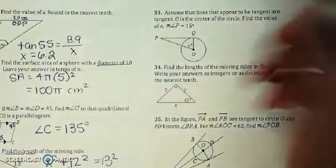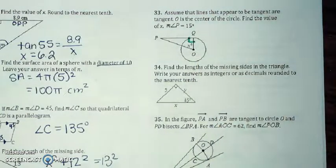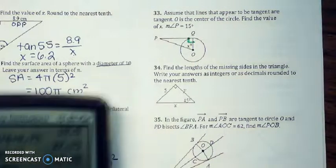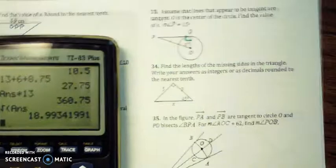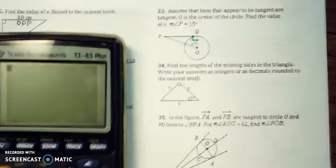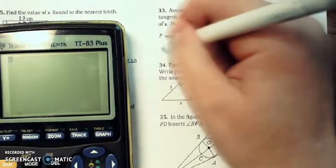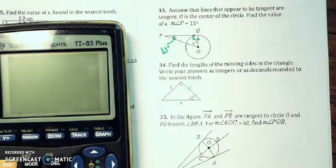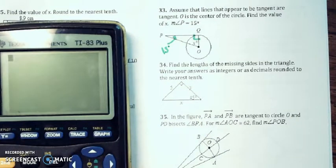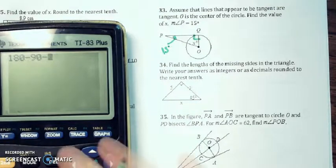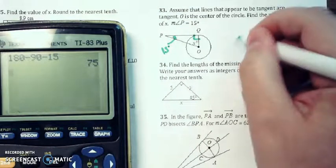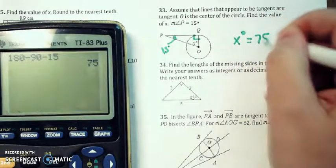Alright. The key to doing number 33 is remembering that a tangent to a circle if it runs into a radius is automatically going to be a 90 degree angle. And they're giving us this angle here P is 15. And to get x, we know the inside angles of a triangle add up to 180. So I'm going to subtract 90 and I'm going to subtract 15. So x here is going to be 75 degrees.